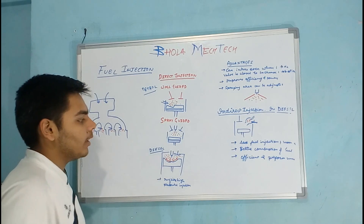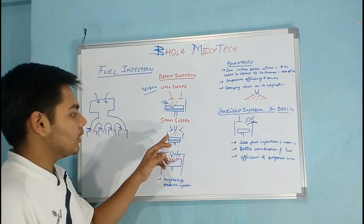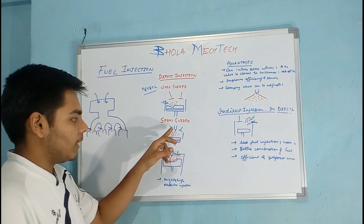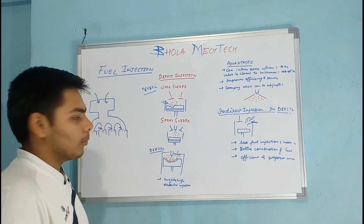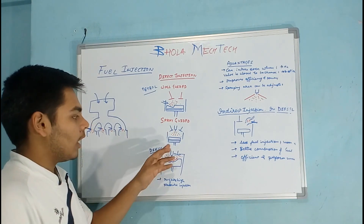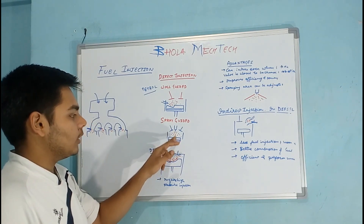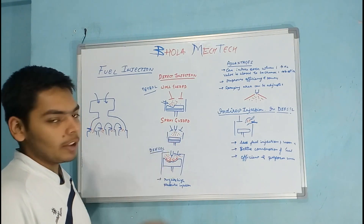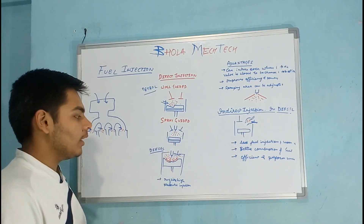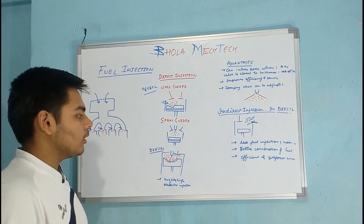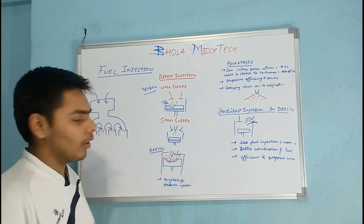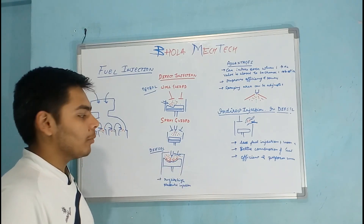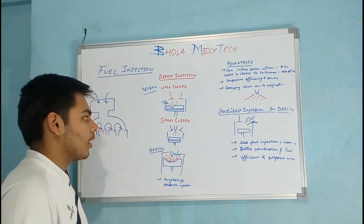In the spray guided type, the fuel injector is placed at the top of the cylinder. The fuel is injected and sprayed throughout the complete cylinder. Since the fuel is in atomized form, it mixes with the air very well.